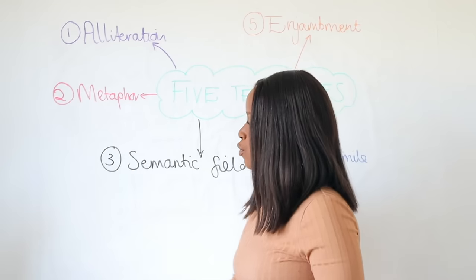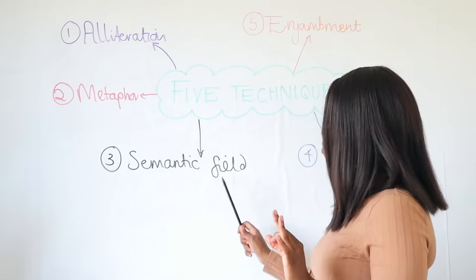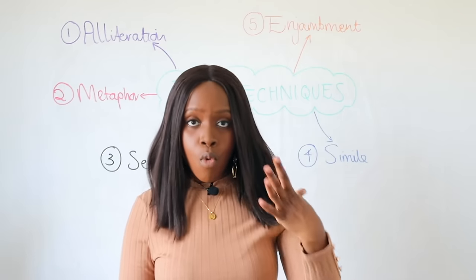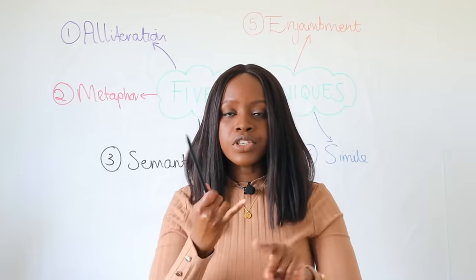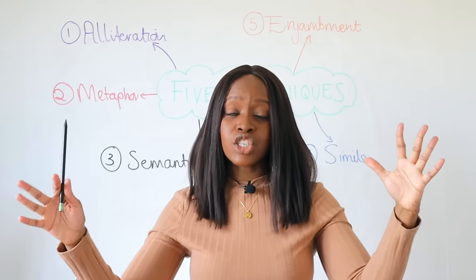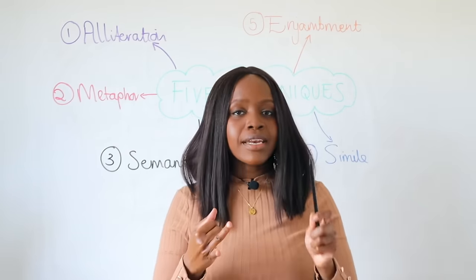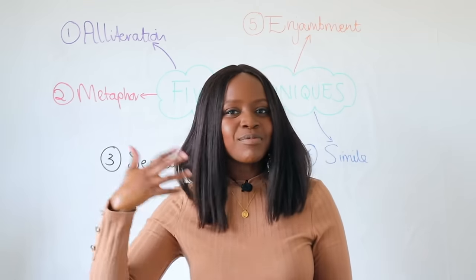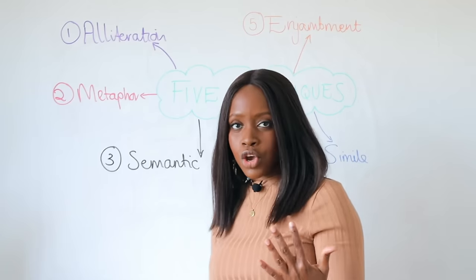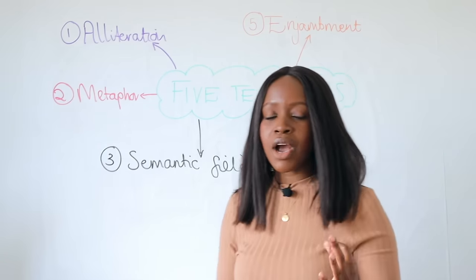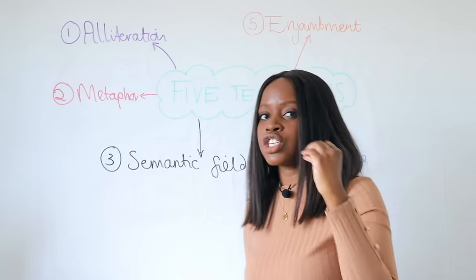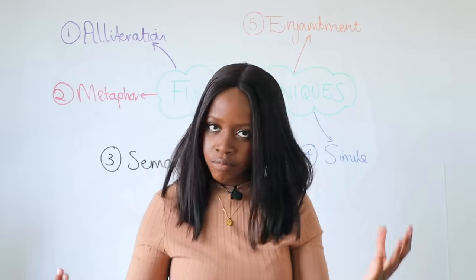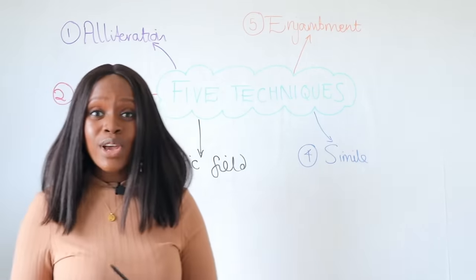The third technique you can bank on is semantic field. Semantic field is two, three, or more words that belong to a wider category. For example, roses, daffodils, and sunflower belong to the wider semantic field of flowers; iPad, laptop, and phone belong to the semantic field of technology; chair, table, and sofa belong to the semantic field of furniture. You just need to spot two or more words that belong to a certain category and identify the semantic field they belong to.